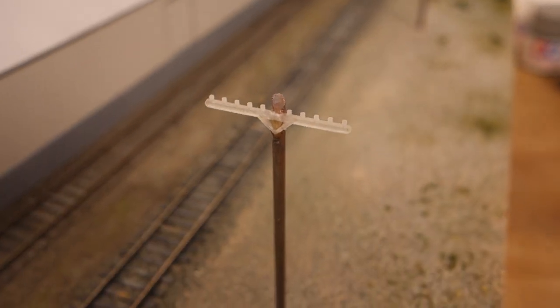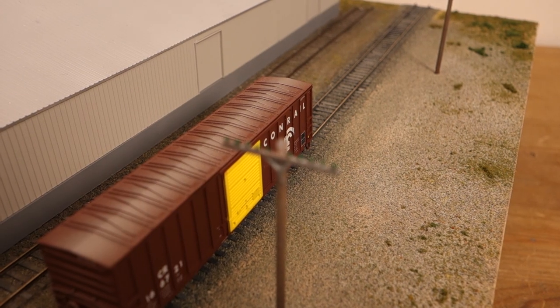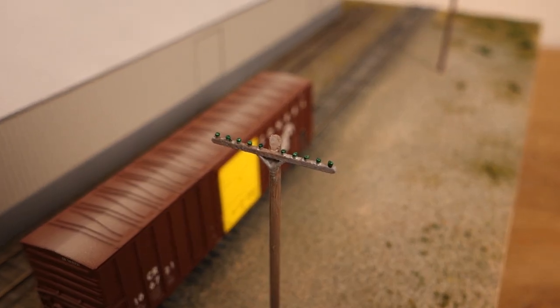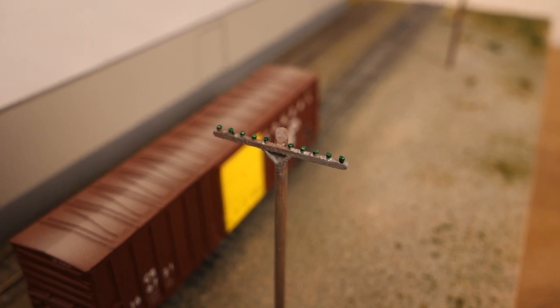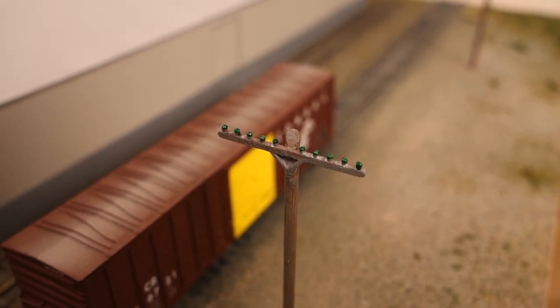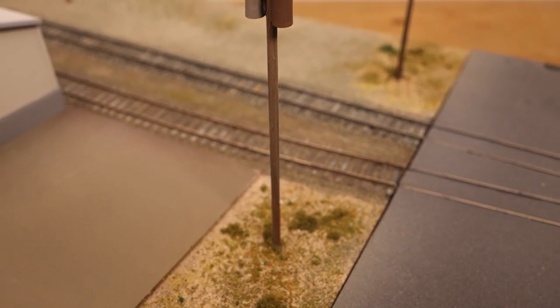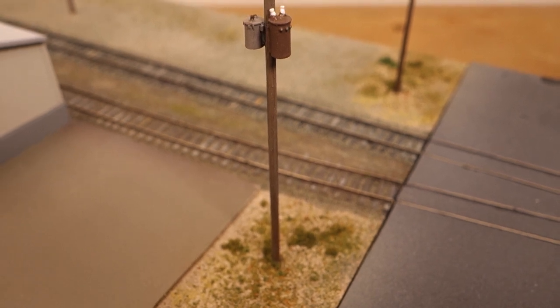Oh, and another update from the future. Shapeways delivered the printed cross arms way faster than I thought, so here's the pole with the replacement cross arm in place and after painting. I think it ended up a bit oversized. Maybe I'll have another go at it at some point, but not today. I hope you found this video helpful. If you have any remaining questions, let me know in the comments.